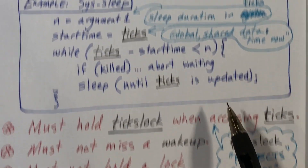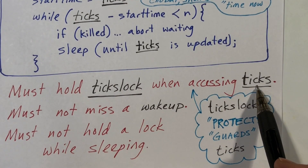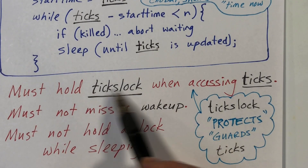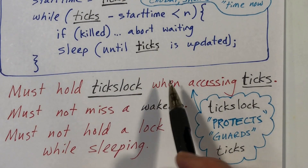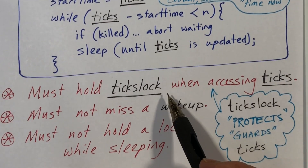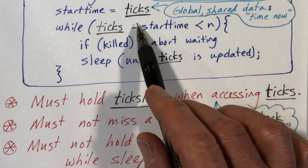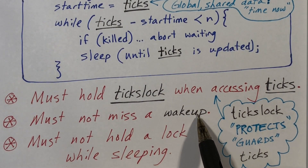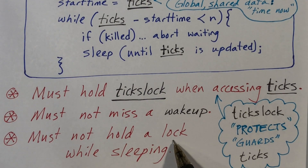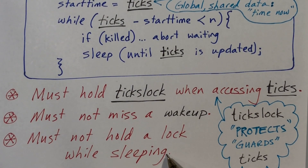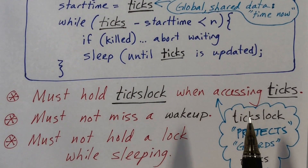The global variable ticks is protected, or guarded, by a lock. If you want to look at or modify ticks, you need to first acquire ticks lock. So we must hold ticks lock while looking at ticks — for example, when we check the condition. But we also cannot hold locks while sleeping, because spin locks must be released quickly and we cannot hold a spin lock while a process is sleeping.